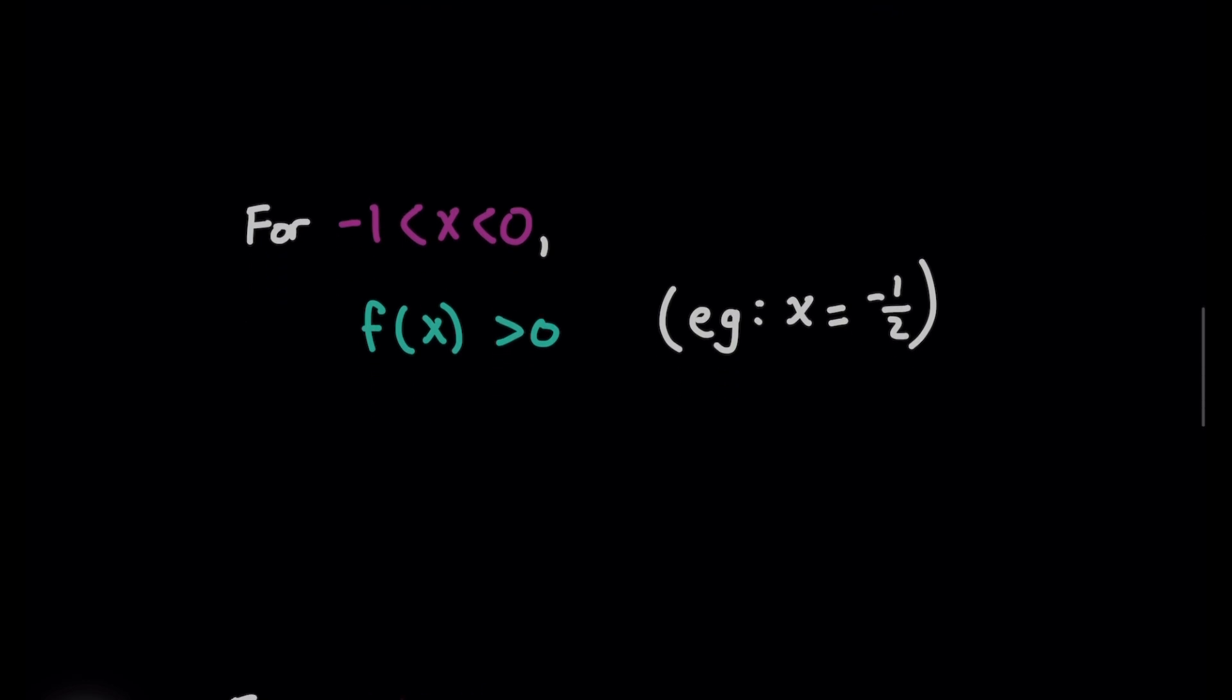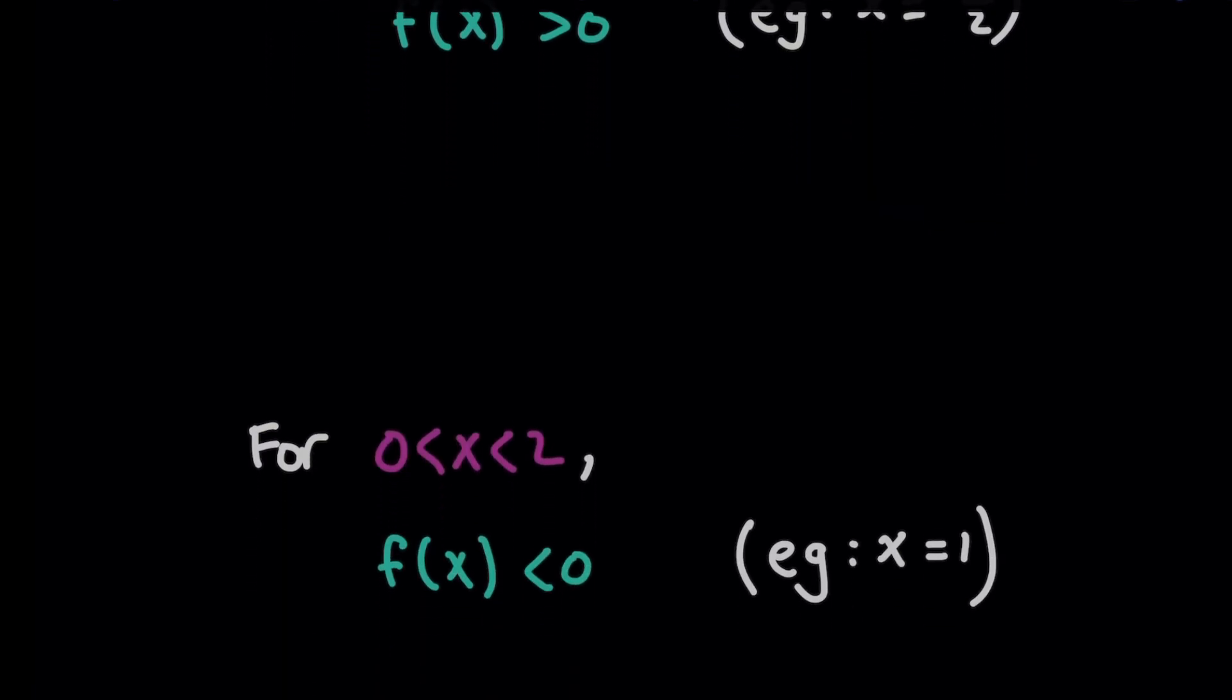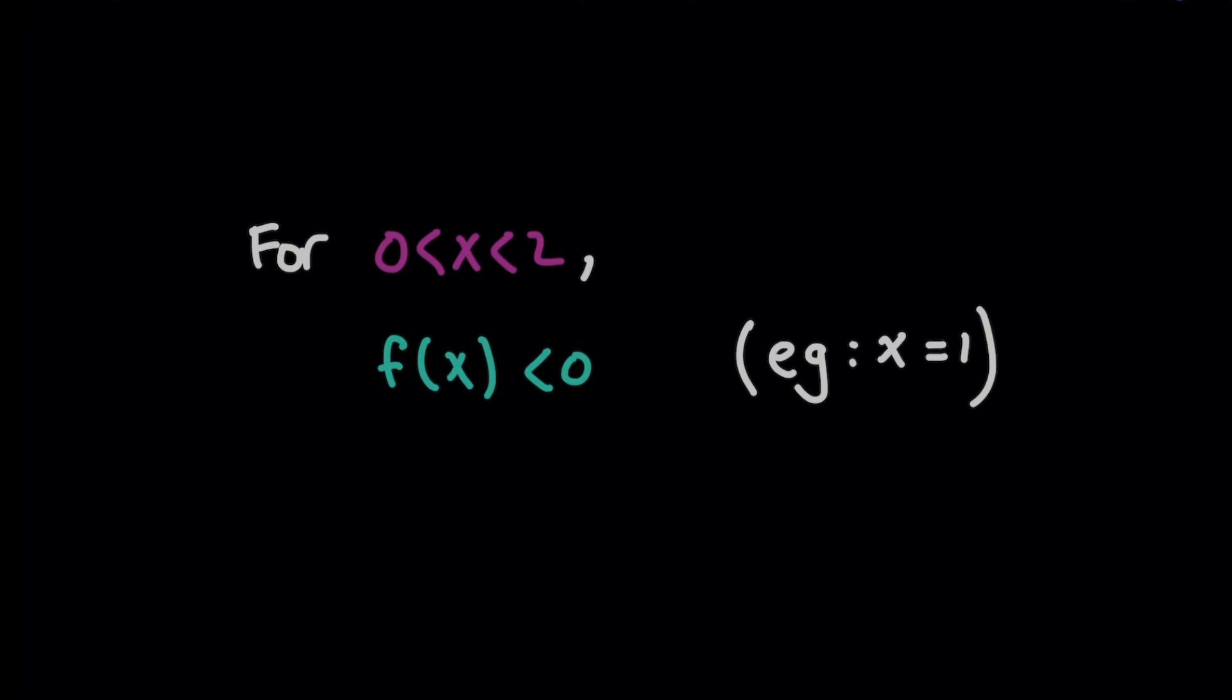And so next, I would move on to the next interval from negative one to zero, because zero was another root that we found. And by plugging in x equals negative one half as an example value, f of x is greater than zero. And you get the idea, right? Because now we try the interval zero to two, and I'm going to plug in a value of x as one, and that's going to tell me that f of x is less than zero.